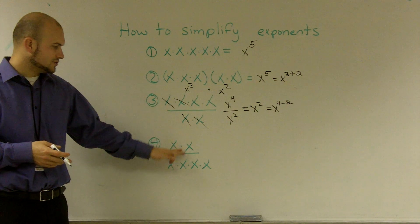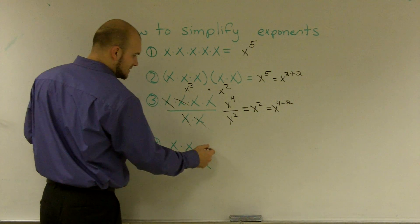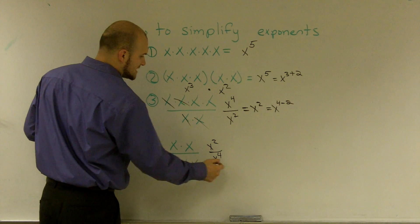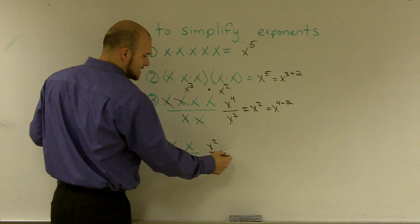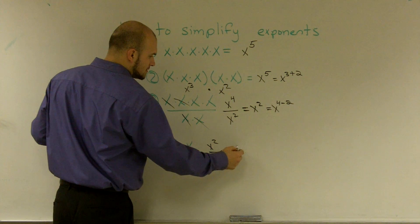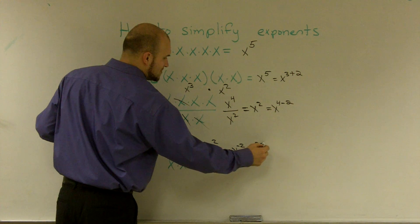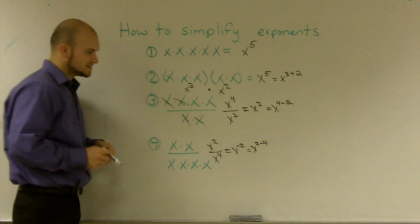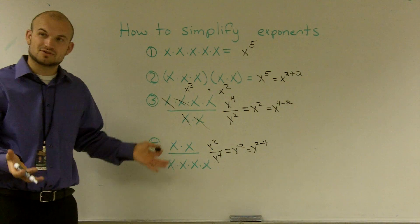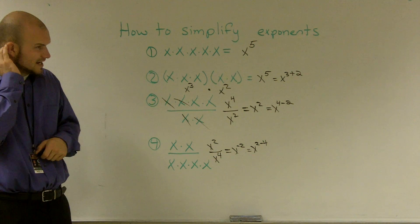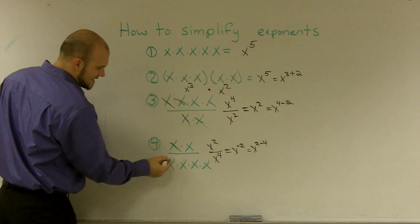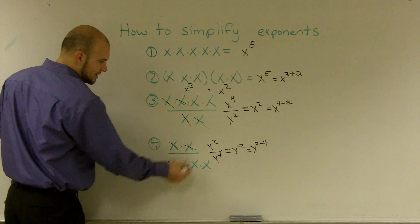Now, if I was going to do this down here, I would say this is x squared and this is x to the fourth. So if I do my subtraction, I'd get x to the negative 2 because x2 minus 4 equals x to the negative 2. And let's see how that works. Well, if I cancel these out, that equals 1, and that equals 1, I'm left with 1 over x squared.